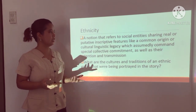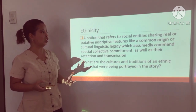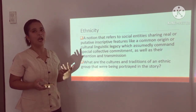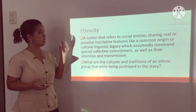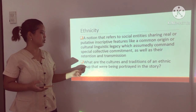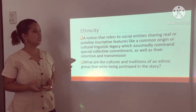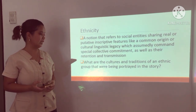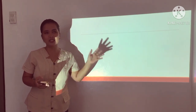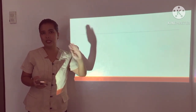Another dimension is ethnicity. Ethnicity is more of a depiction of the culture itself — a notion that refers to social entities sharing real or putative inscribed features like a common origin or cultural-linguistic legacy, special collective commitment, as well as their retention and transmission. The question in line with ethnicity is: what are the cultures and traditions present in the time of an ethnic group that were being portrayed in the story? The geographic, language, and ethnicity dimensions are all present in literary works — it can be a story, a poem, or any other literary form.